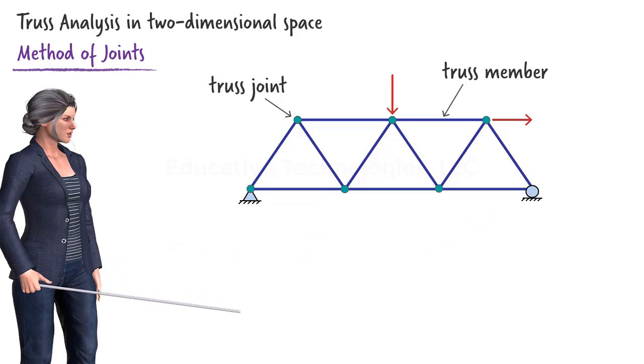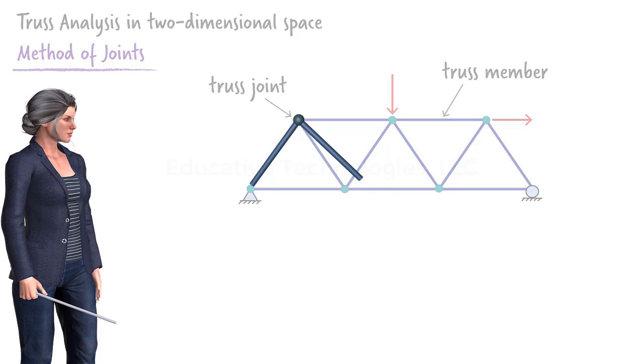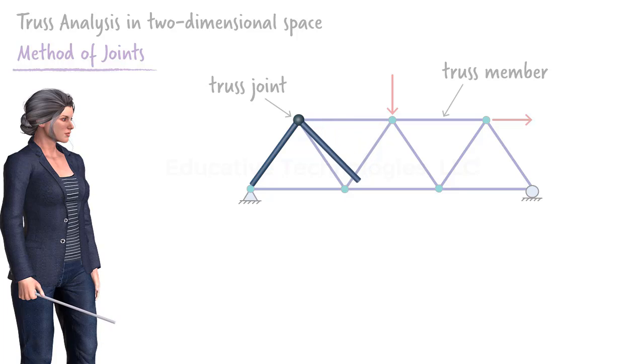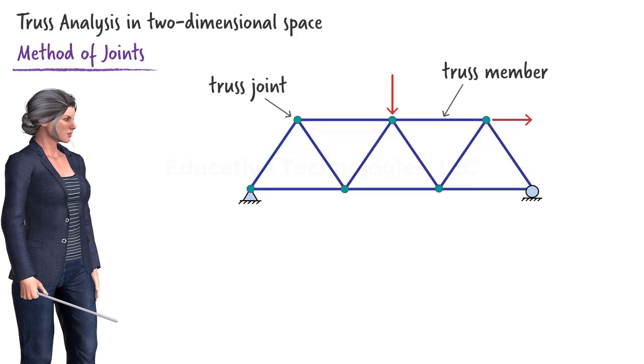In theory, we consider a truss joint as a mechanism that allows the attached members to rotate relative to each other like this. However, the amount of joint rotation is restricted by the geometry and topology of the structure.